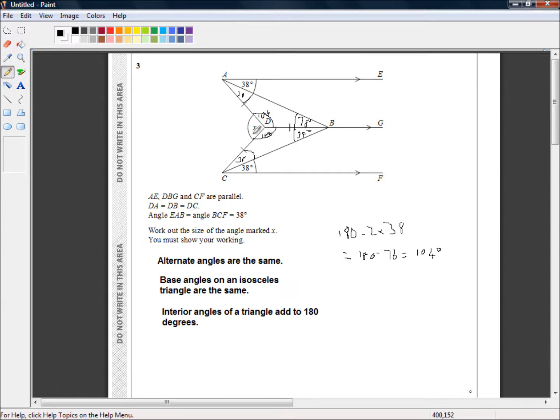Which means x, because these angles all make a circle, x must be 360 minus 2 times 104. So x equals 360 minus 2 times 104